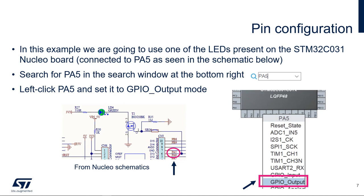Now we're going to configure the pin we'll be using to turn on or off the LED on our nucleo board. From the schematic, you can see that PF5 of your STM32C0 is connected to a transistor to turn on or off the green LED, which is LD4. We're going to configure PF5 as an output push-pull, outputting 0 or 1 to turn the LED on or off.